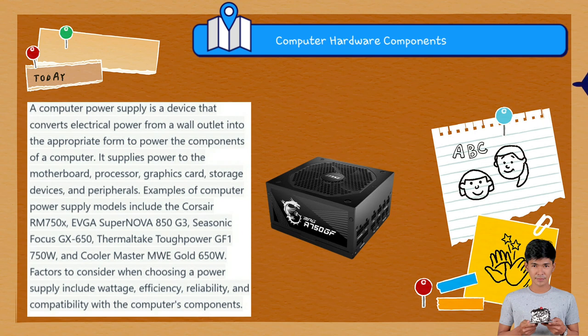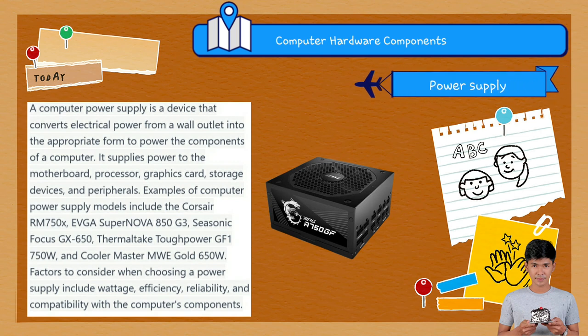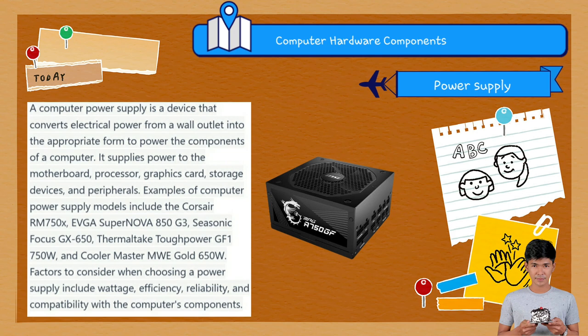Lastly, we have the power supply. A computer power supply is a device that converts electrical power from a wall outlet into the appropriate form to power the components of a computer. It supplies power to the motherboard, processor, graphics card, storage devices, and peripherals. Examples include the Corsair RM750X, EVGA Supernova 850 G3, Seasonic Focus GX 650, Thermaltake Tough Power GF1 750W, and Cooler Master MWE Gold 650W. Factors to consider when choosing a power supply include wattage, efficiency, and reliability. In other words, the power supply is like the heart that keeps everything running — it provides the necessary electrical energy to all components, ensuring they have the power they need to function.